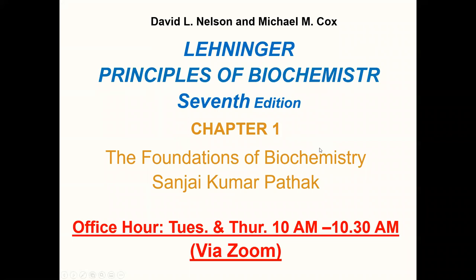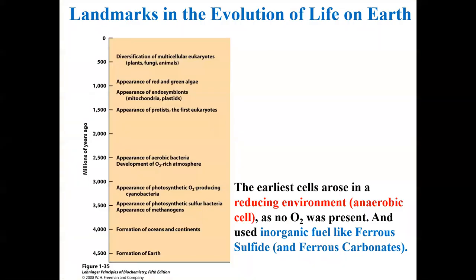Let's get started with our first lecture, chapter one, which basically describes some of the concepts that you already have learned in your previous classes — the prerequisites for this course. What is biochemistry? Biochemistry is nothing but chemistry of life. What kind of chemical reactions happen in our cells so that our cells together, for example in a tissue, can function and do their function.